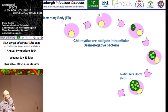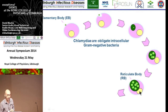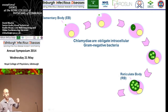The organism changes and at this point it's called a reticulate body, which is much larger than the elementary body. The reticulate body stage is metabolically active but non-infectious, whereas the elementary body stage is infectious but not metabolically active. In terms of understanding immune responses, if you could kill the cell at the elementary body stage, the organism can't go on and infect another cell.